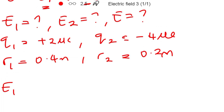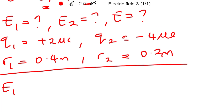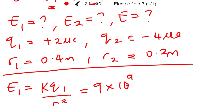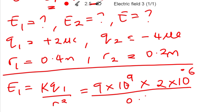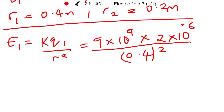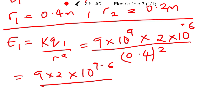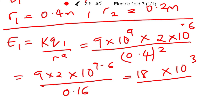We say E1 equals k times q1 over r1 squared. We know k is a constant equal to nine times ten to the power of nine. For q1, we don't use positive or negative — we just take the magnitude, which is two times ten to the power of negative six, divided by 0.4 squared. This equals nine times two times ten to the power of nine minus six, divided by 0.16.